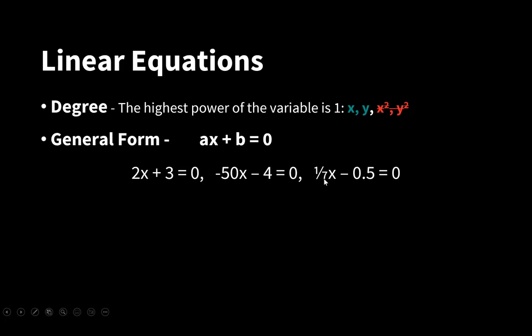b is the constant, it's a numerical value. In these expressions, 3, minus 4, and minus 0.5 are the constants.